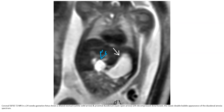On fetal MRI, T2 imaging demonstrates the classic double bubble sign with a distended stomach and proximal duodenum with decompressed distal bowel, confirming the diagnosis of duodenal atresia.